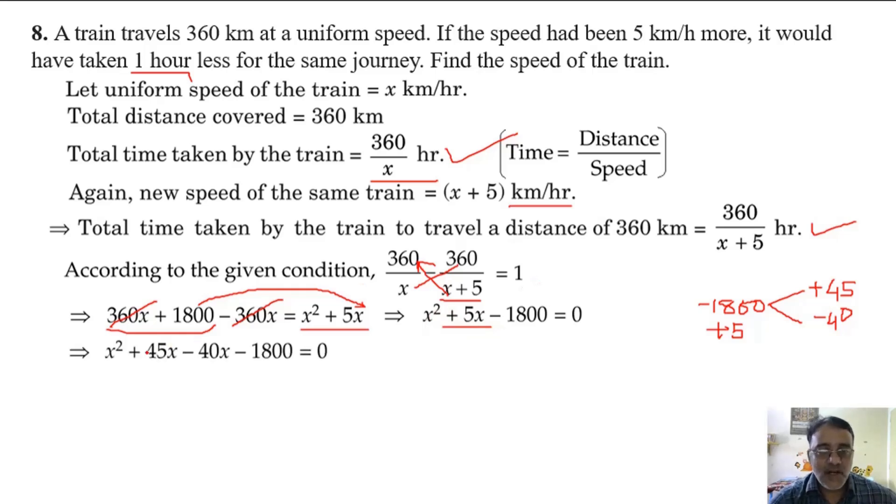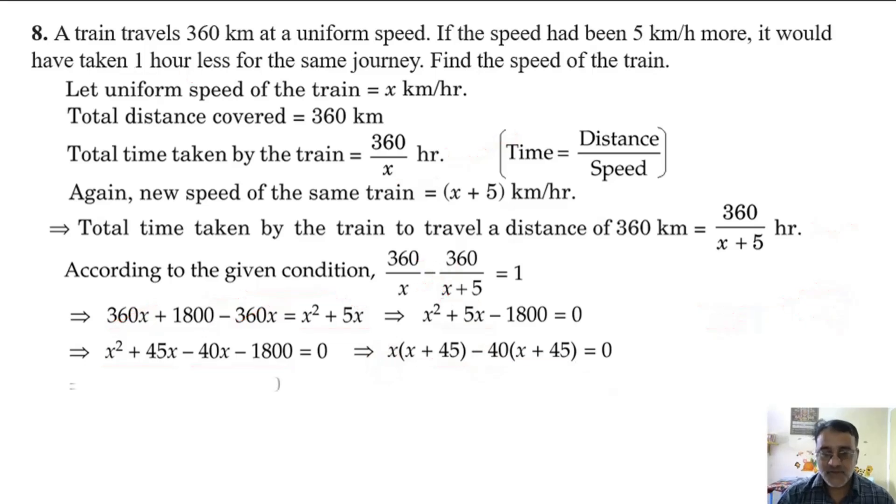What is common between these two? x. And what is common between these two? x + 45. So final factors are (x - 40)(x + 45). Either x - 40 = 0 or x + 45 = 0.